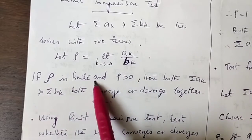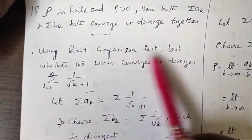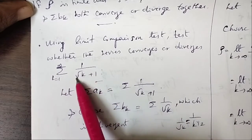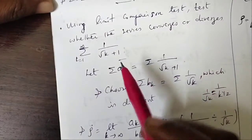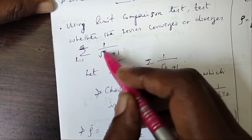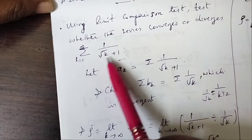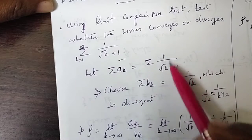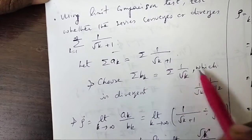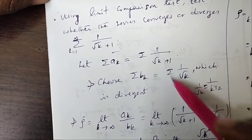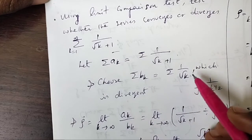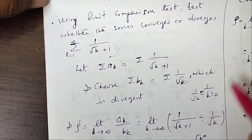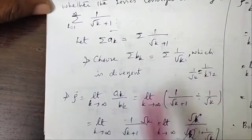Using the limit comparison test, determine whether σ from k=1 to infinity of 1/√(k+1) converges or diverges. Notice the dominant term is 1/√k, so choose σbk = σ(1/√k). This is a p-series with p = 1/2, and since 1/2 is less than one, it is a divergent series.